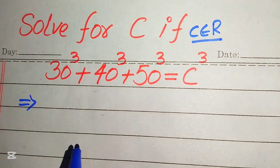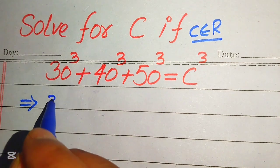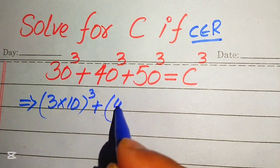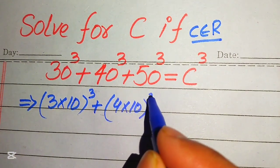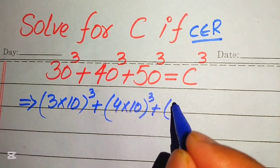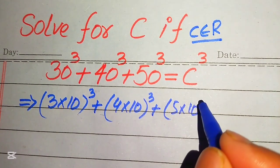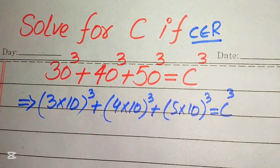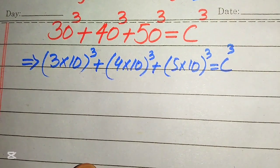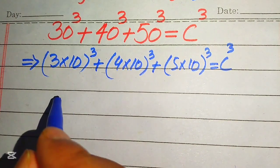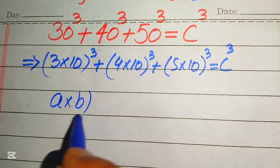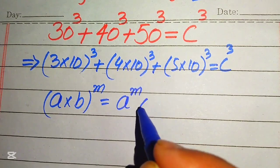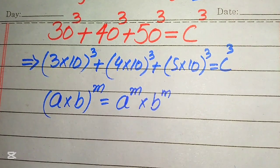First, we rewrite this equation: 30 is written as 3 multiplied by 10, whole cubed; 40 is written as 4 multiplied by 10, whole cubed; 50 is written as 5 multiplied by 10, whole cubed; and this equals C cubed. Now we apply the exponent law: if you have (a × b) to the power m, we write it as a^m multiplied by b^m.